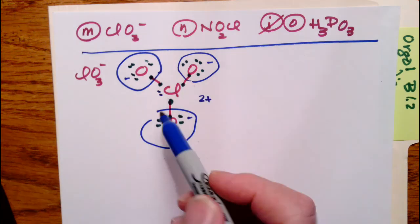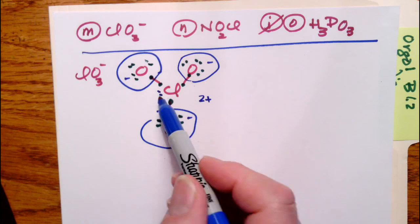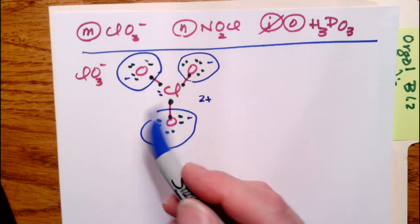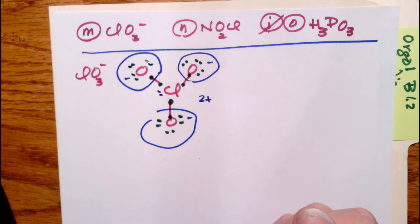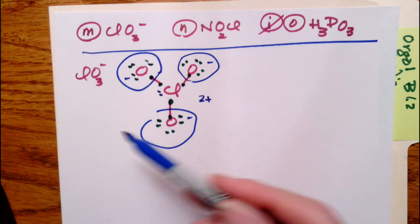So let's count it again. One, two, three, four, five. Should have seven, so it's two plus. Now again, it has too many charges.